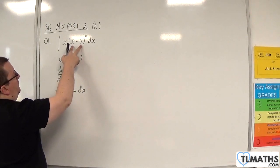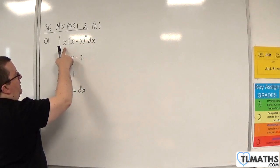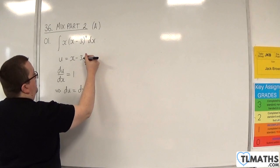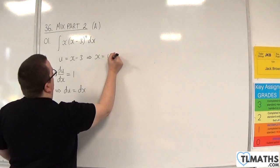So we now have a replacement for the x take away 3 and the dx, we don't have a replacement for the x, so go back to the substitution and rearrange that to get x is equal to u plus 3.